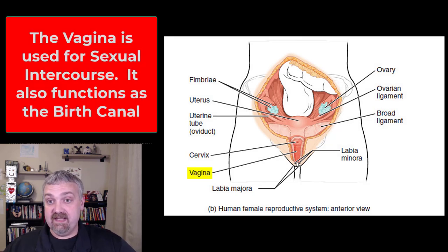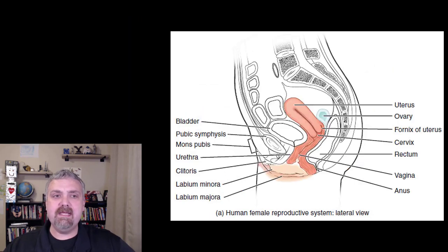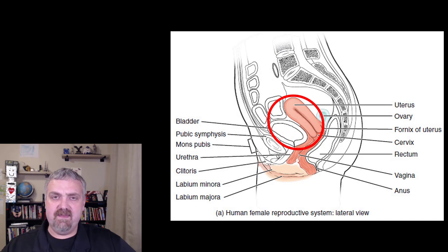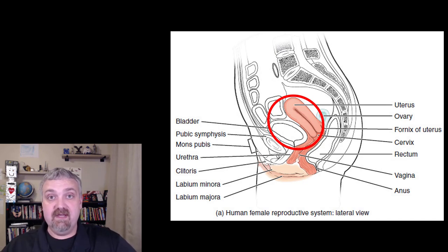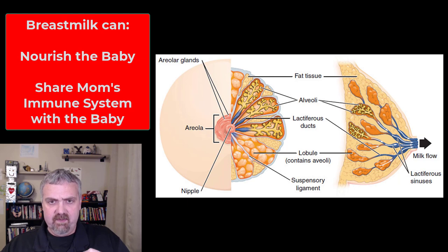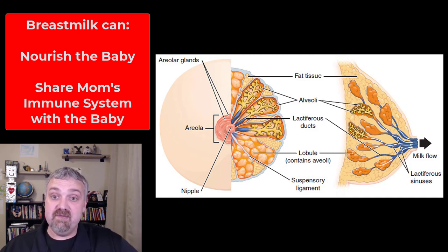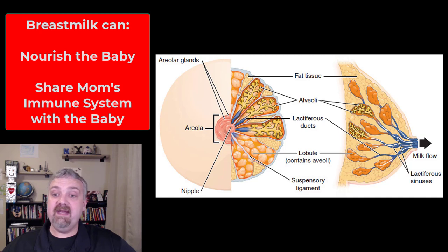Then we'll cover the external genitalia. Looking at the side view, one thing to notice — as we discussed with the urinary system — is that the uterus actually rests on the bladder. This is why anyone who's been pregnant knows the bladder can't fill fully, so there's an urge to urinate all the time as the uterus grows. Once the offspring has been developed, nourished, and delivered, you then need to nourish the baby — and that's where another accessory structure comes in: the mammary glands in the breast.